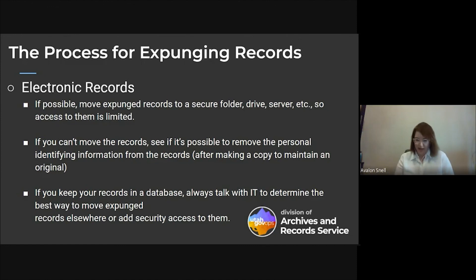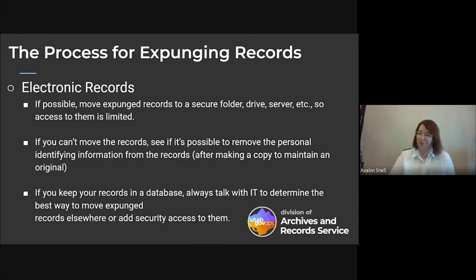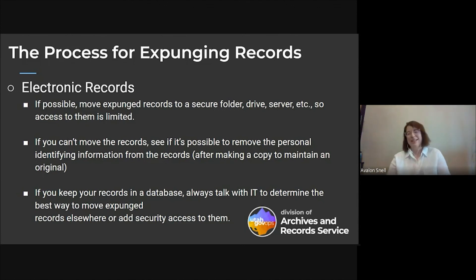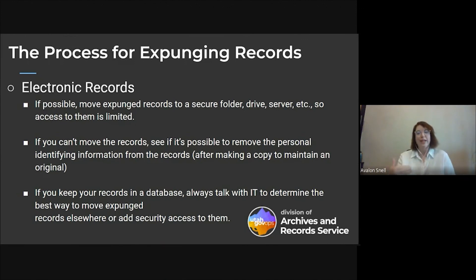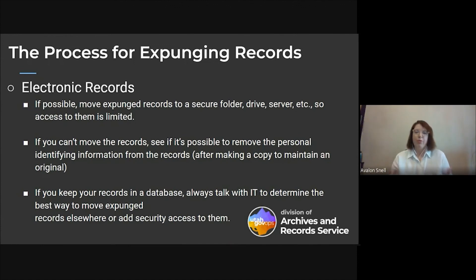If you can't move the records, see if it's possible to remove the personal identifying information. Before you do this, make sure you make a copy to maintain an original, and put the original on a secure drive, server, or in a secure folder away from all of the other records — because you need an original in case the expungement is reversed. And if it's in a database, talk to your IT to see if there are ways to remove the expunged records or move them into a separate portion of the database.